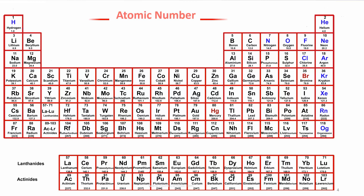The element's atomic number is at the top of each square, and it shows its place in the list from lightest to heaviest.